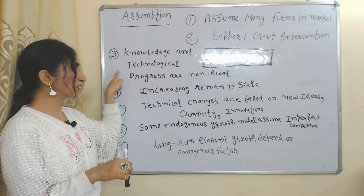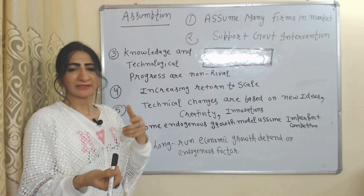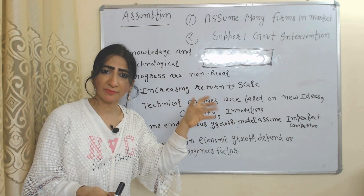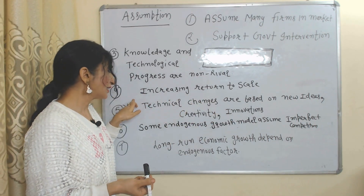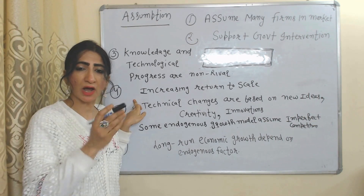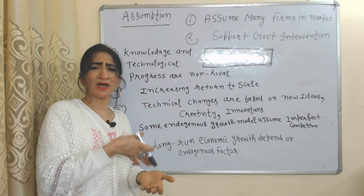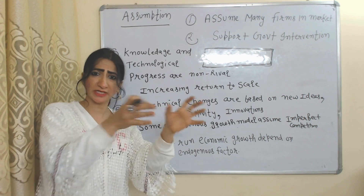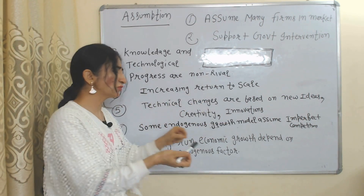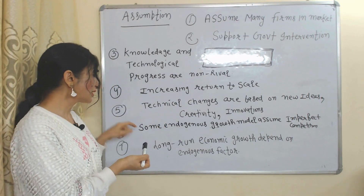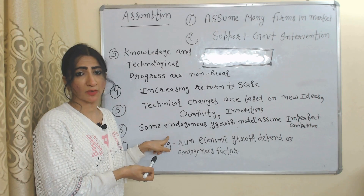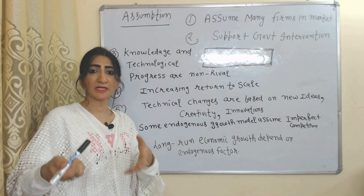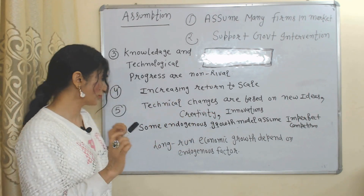Key assumptions include: knowledge and technological progress are non-rival — if one person uses knowledge to develop technology, it will not reduce another person's ability to use it. There are increasing returns to scale, meaning we receive more output compared to input through R&D and human capital accumulation. Technical changes are based on new ideas, creativity, and innovation. Some endogenous growth models assume imperfect — specifically monopolistic — competition, since R&D and innovation are mainly associated with it.